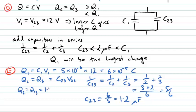And now we can calculate what Q2 and Q3 are. They're this capacitance, 1.2 microfarads, times the voltage across that branch, which was 12 volts, which comes out to be 1.4 by 10 to the minus 5 coulombs.